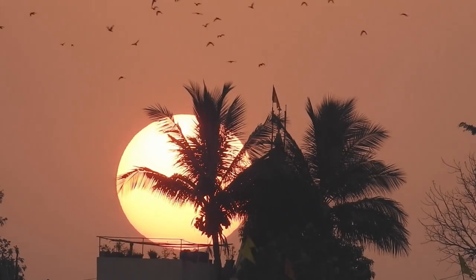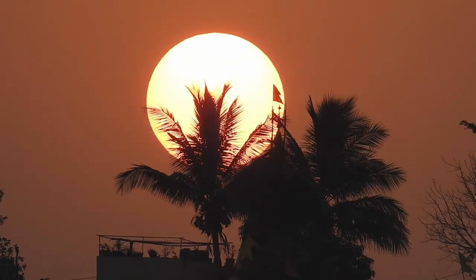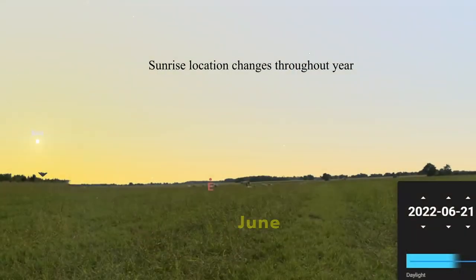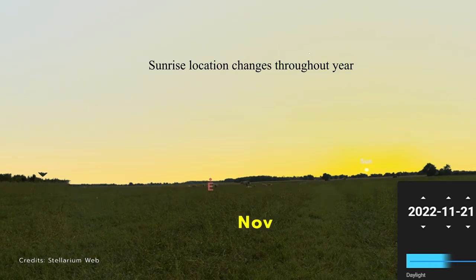As you know, the sun rises in the east and sets in the west. But every day, the sun does not rise at the same location. How can we find a true east direction then?